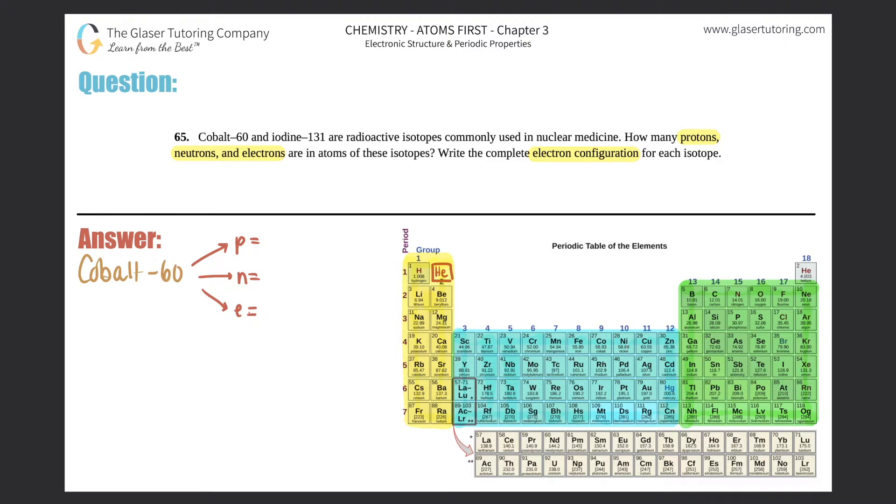But now let's get down to the question. So we got to find out protons, neutrons, and electrons in cobalt-60. Now they say cobalt-60, so first let me just show you where cobalt is, and it's right here. And remember, we always take the atomic number for any element, because each atomic number is specific and unique to each element.